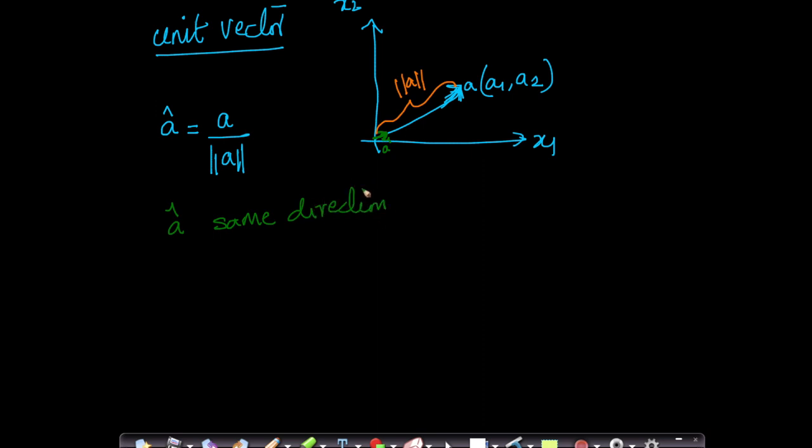Number one: same direction as vector a. Number two: since you're dividing vector a by length of a, the length of the unit vector is one. We're taking the whole vector and dividing it by its length, which means the length of your unit vector will be one. So this is the concept of a unit vector. This will come in very handy when we learn more advanced concepts of linear algebra. I've just defined some simple terms here.